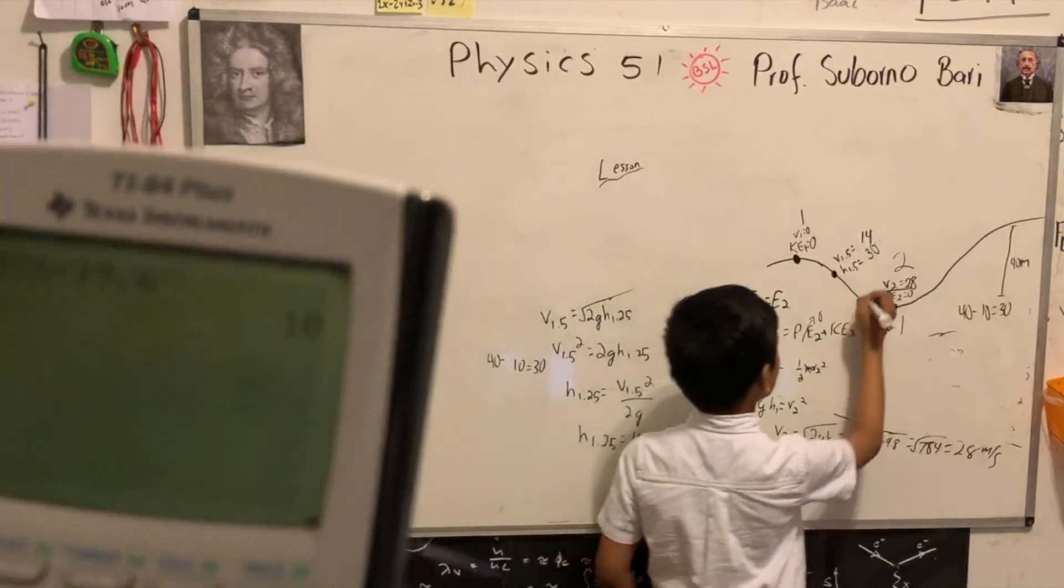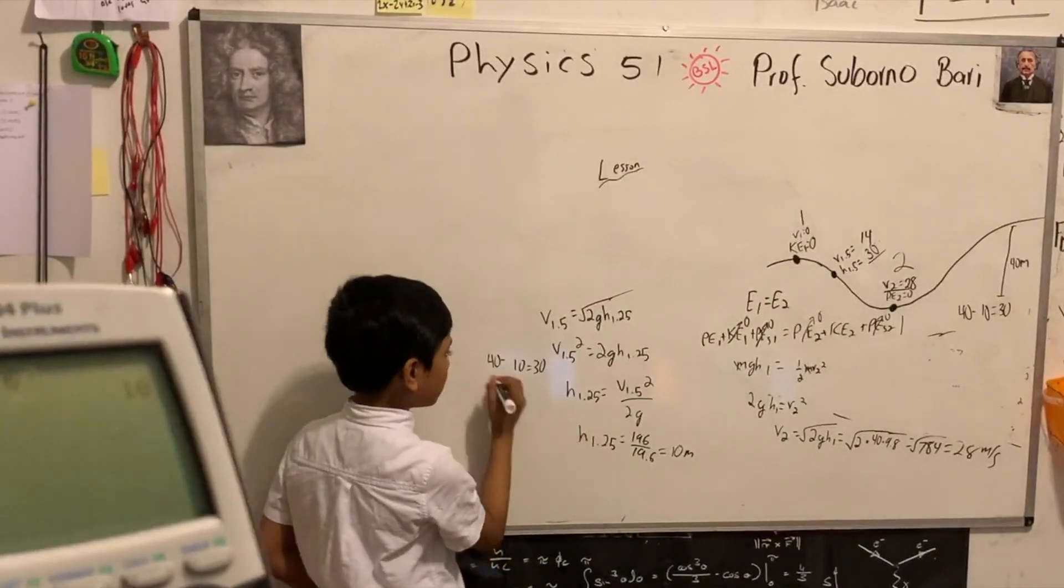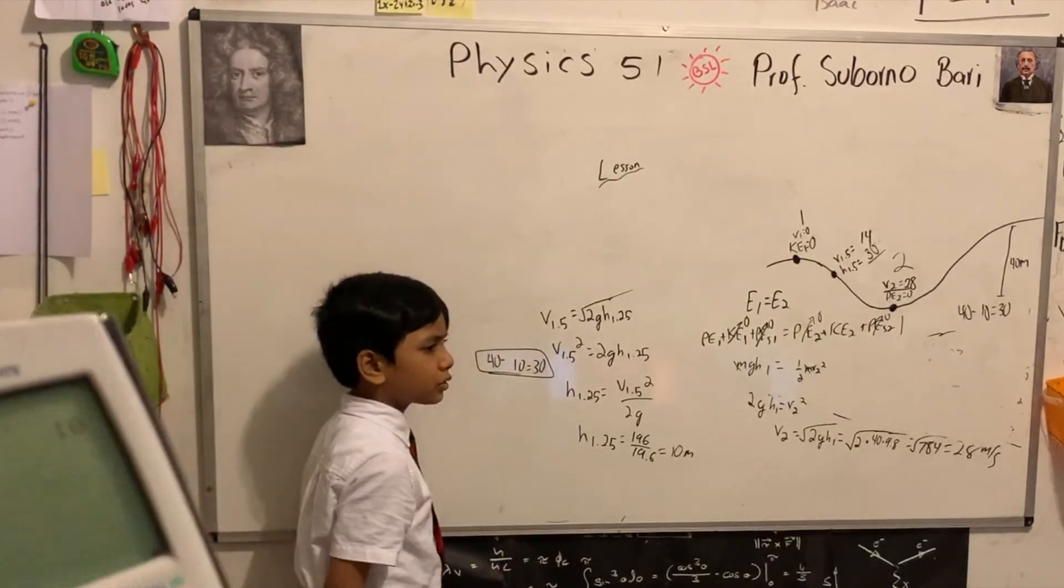So what do we have to calculate? The height. So we just calculated. 10 meters. 10 meters. 30 meters. 30 meters.